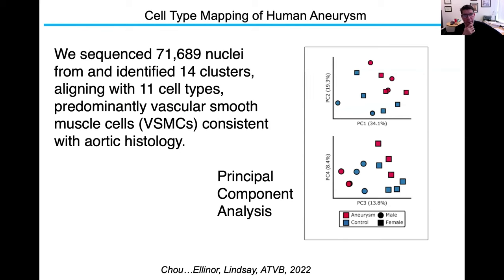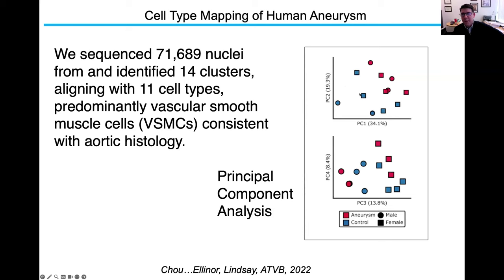We ended up with about 71,000 nuclei from these 13 samples. We performed unsupervised clustering. I know UMAP has been getting a bad rap lately, but I think it's still a very useful way of looking at cells if you don't over-interpret things. The first four principal components were able to differentiate aneurysms from controls quite nicely in clusters, regardless of sex. The next two were able to differentiate men and women regardless of aneurysm status.